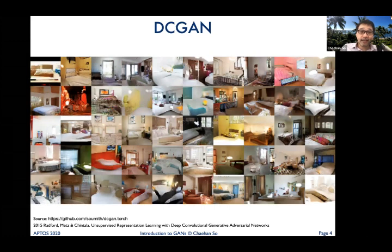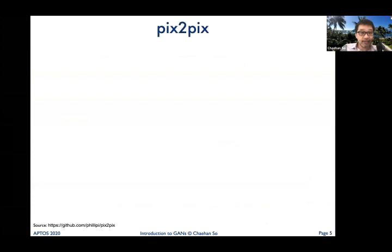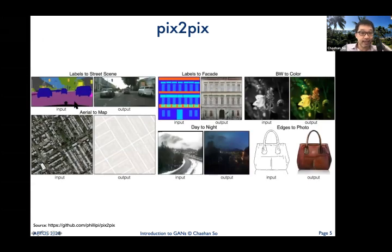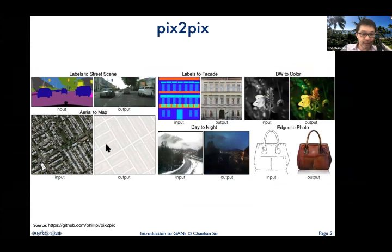The next interesting GAN was Pix2Pix, and it showed many different applications. For example, on the left side you have a schematic of a street, and the GAN can generate a whole street scene that looks more or less real. It can do the same with a house schematic, an aerial view to map view conversion, black-and-white to color pictures, and even fashion sketches — if you have just a sketch, it can generate a product image.